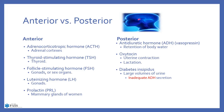The anterior pituitary is also responsible for TSH (thyroid stimulating hormone) from the thyroid, FSH (follicle stimulating hormone) from the gonads, luteinizing hormones from the gonads, and prolactin from the mammary glands of women.